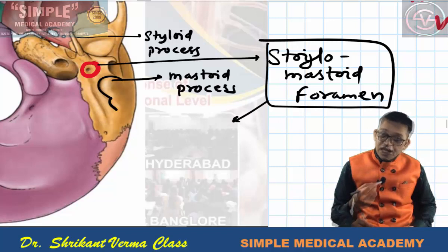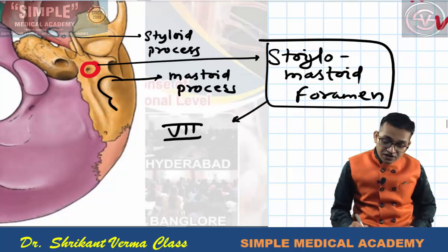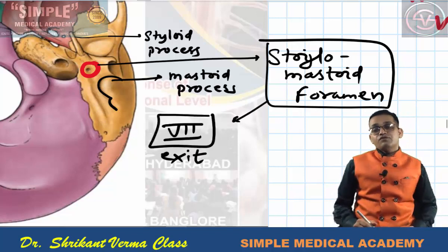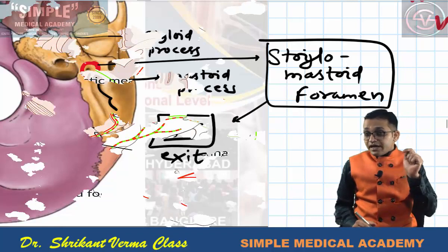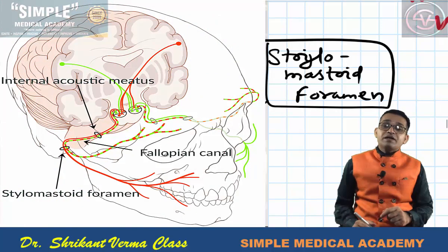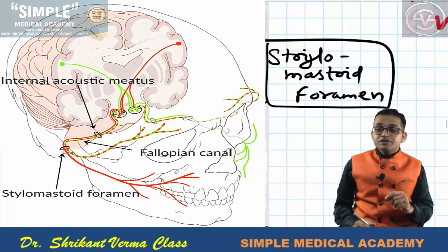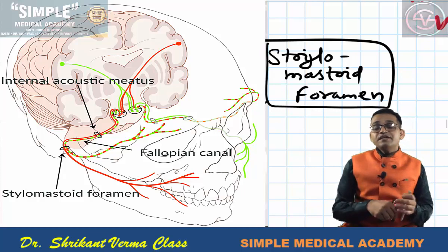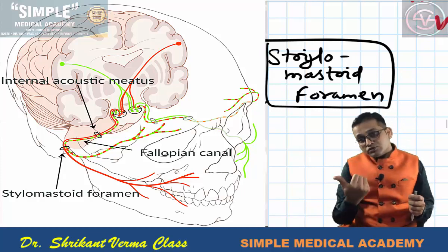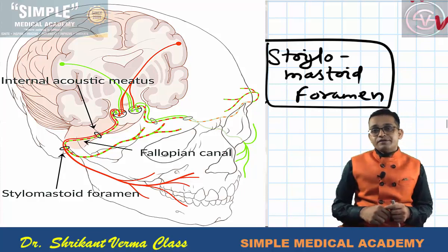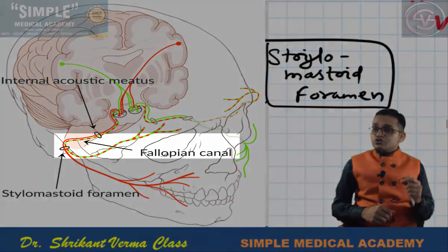Which nerve passes through this stylomastoid foramen? The facial nerve exits through this foramen. The facial nerve enters within the petrous part of the temporal bone via the internal acoustic meatus, then comes outside the cranium through this foramen.